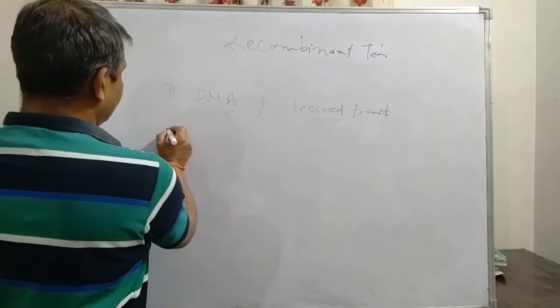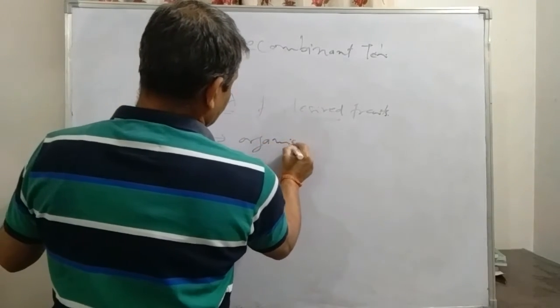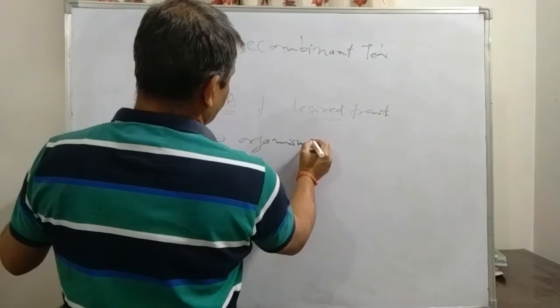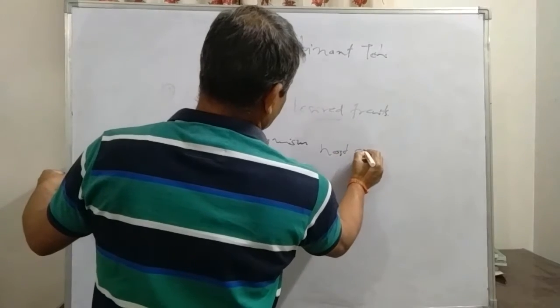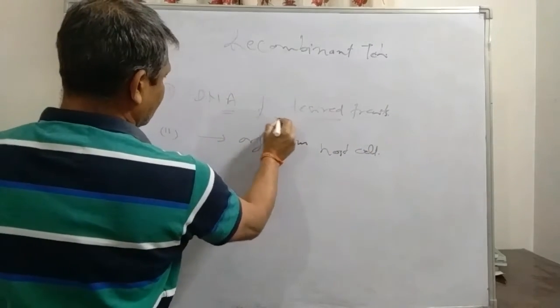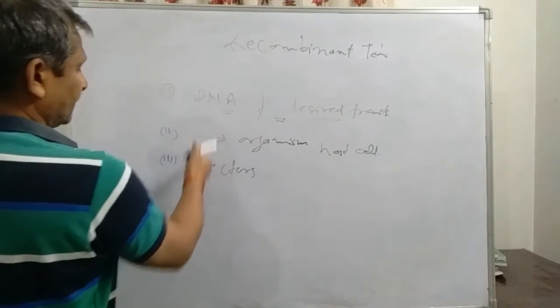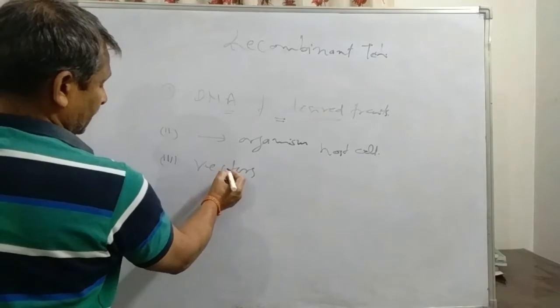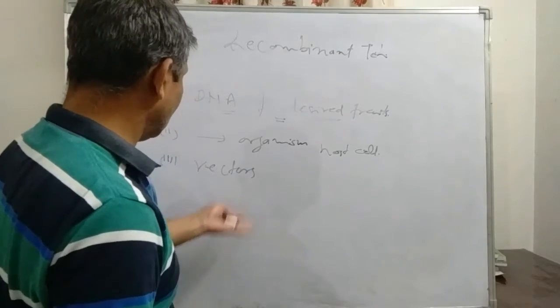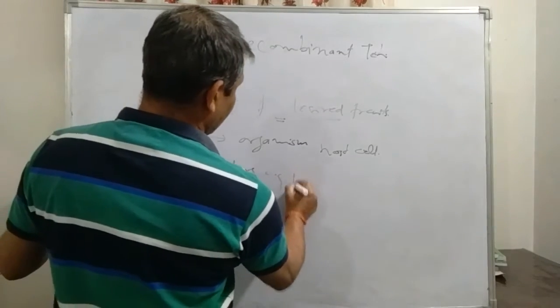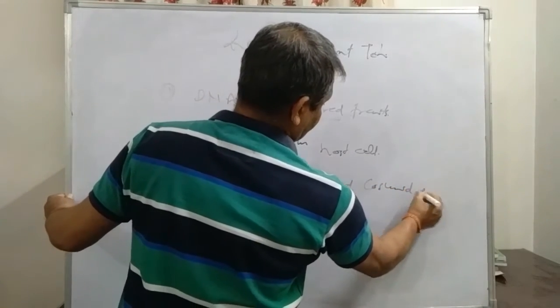And then we associate in another organism or host cells. And how we transfer, with the help of the vectors. With the help of vectors, we transfer genes from one organism to another. For example, plasmids, cosmids, etc.